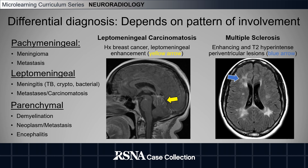The differential diagnosis depends on the pattern of involvement. For pachymeningeal involvement, it is important to consider meningioma and metastases. For leptomeningeal involvement, one must think about meningitis and metastases — on the left we can see an example of leptomeningeal carcinomatosis in a patient with a history of breast cancer. For parenchymal involvement, the differential includes demyelination, as shown on the right in the example of multiple sclerosis, in addition to neoplasm, metastases, and encephalitis.